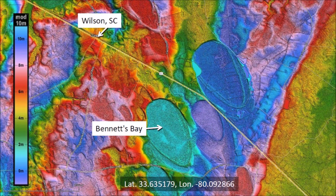This is a LiDAR image of the terrain surrounding Bennetts Bay, which is located about 2 miles southeast of Wilson, South Carolina. Bennetts Bay is one of the few large intact bays remaining in South Carolina. It was previously known as Junkyard Bay, which is how it appears in USGS topographic maps, but today it is part of Bennetts Bay Heritage Preserve.